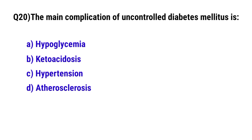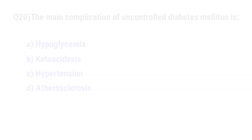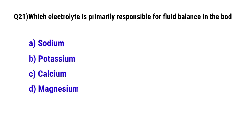Question No. 20. The main complication of uncontrolled diabetes mellitus is? The correct option is B: Ketoacidosis.